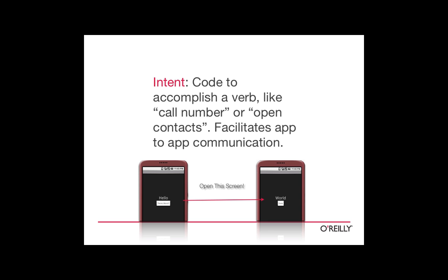One person asked how to check which version of Eclipse and Android SDK are currently installed — we'll show that when we jump back into screen sharing. Another person asked what the comparable Java version is used in the Android VM. I think that would be 1.6. You're able to use Java 1.6 API features — obviously 1.5 features are supported so you can do things like annotations. You can code to 1.6.